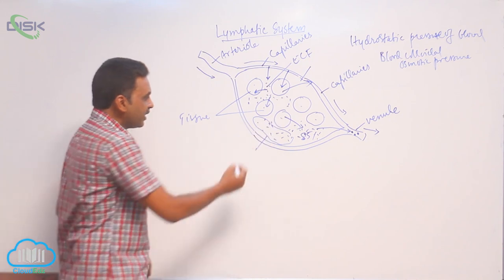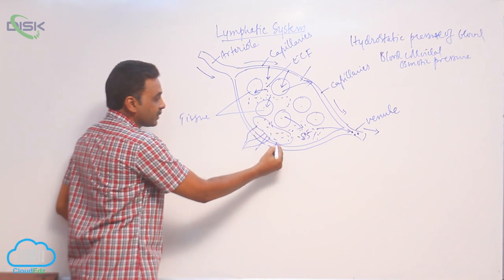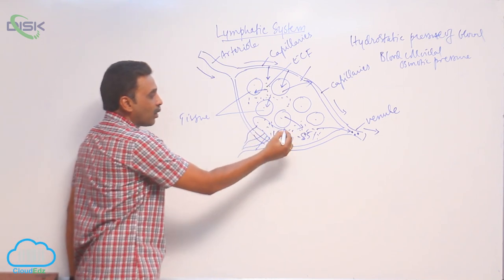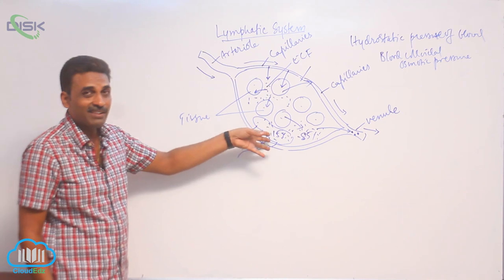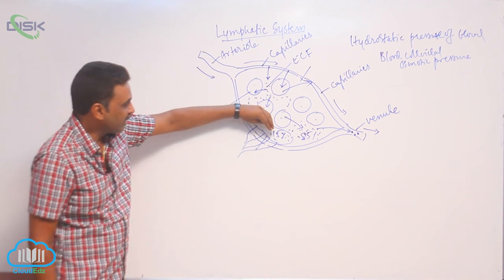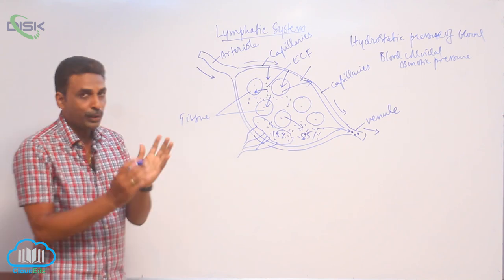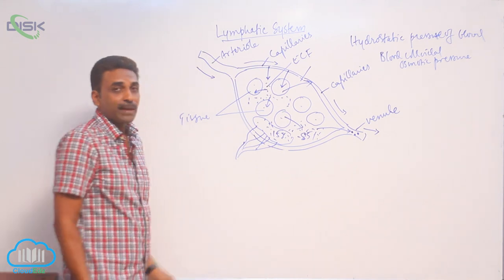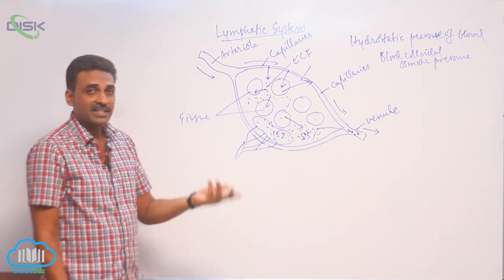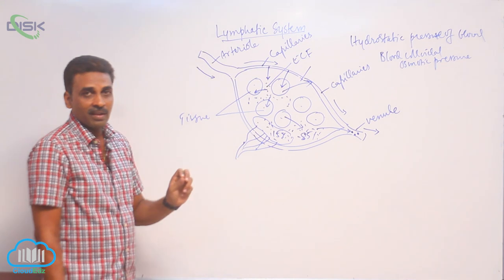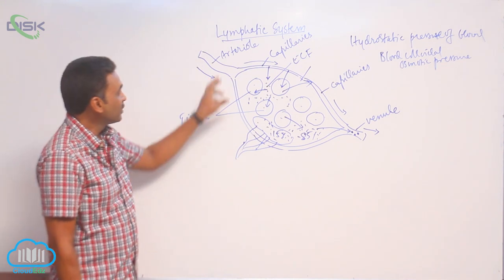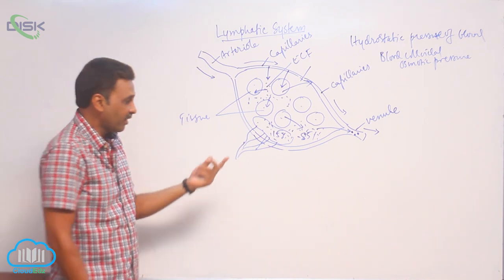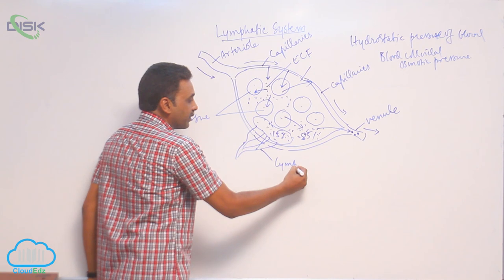A small quantity of the fluid — about 15 percent — is left behind and is collected by a group of capillaries. This left-out interstitial fluid slowly enters into these capillaries, and when it does, the same interstitial fluid or extracellular fluid is now called lymph. The fluid present in these capillaries is called lymph and these capillaries are called lymph capillaries.